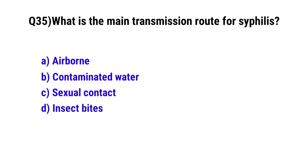Question No. 35: What is the main transmission route of syphilis? The correct option is C: Sexual contact.